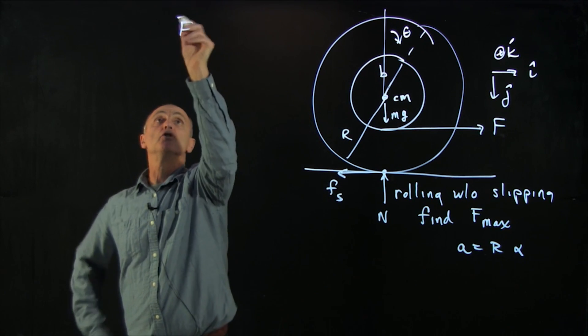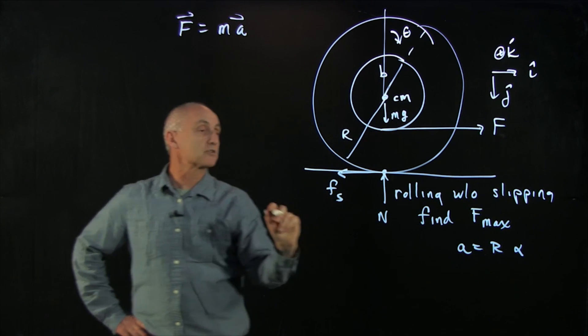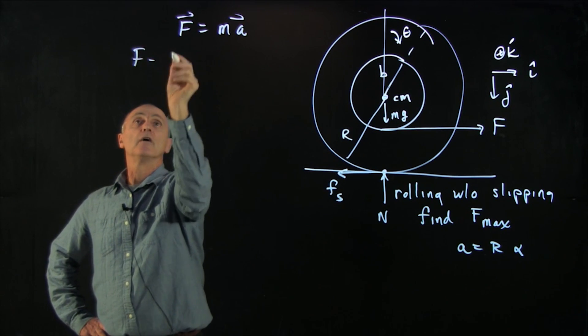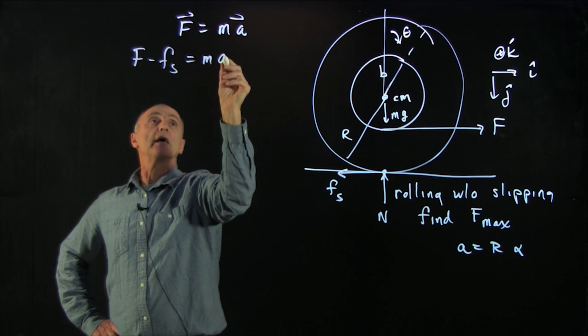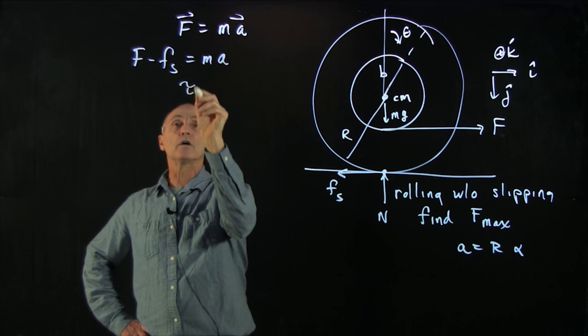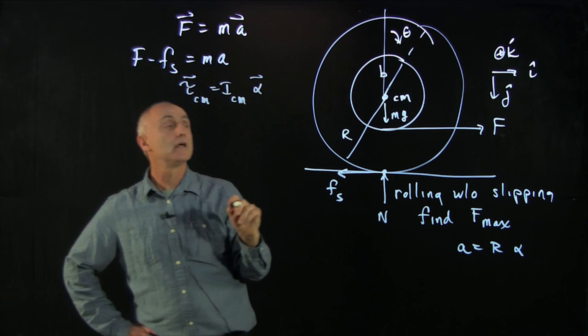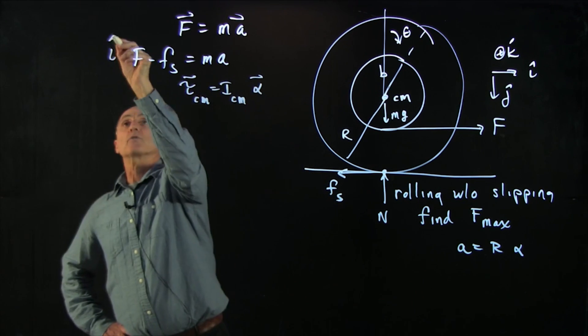And now we can apply Newton's second law, f equals ma. And so in our x direction, we have f minus fs equals ma. And if we look at the torque about the center of mass is I cm alpha, then this is our x equation.